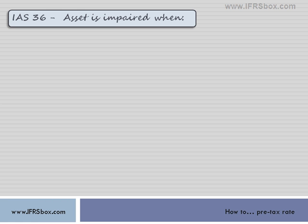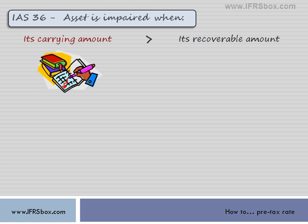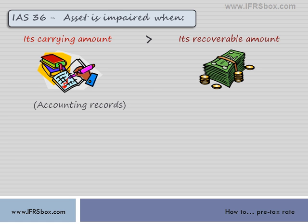An asset is impaired when its carrying amount exceeds its recoverable amount. The carrying amount is the amount at which the asset is carried in accounting records or shown in the financial statements. Simply speaking, the recoverable amount represents the real value of such asset.